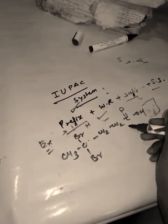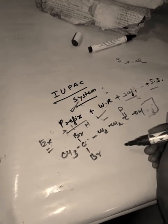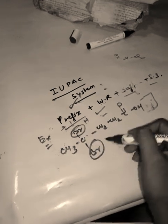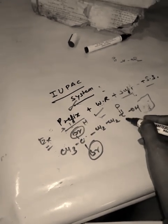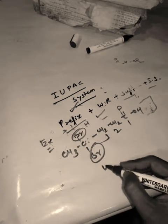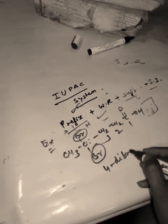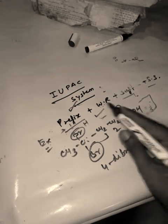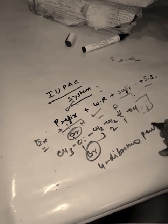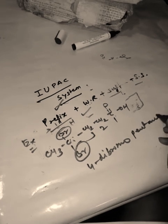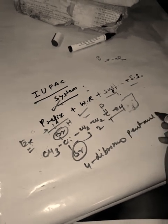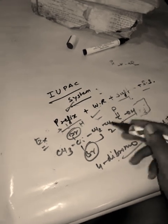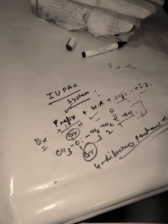Another practice example: two prefixes (bromo groups) are present. Numbering from the appropriate side gives one, two, three, four. Five carbons total — 'pent'. Single bond gives '-ane', and -COOH gives '-oic acid'. So the IUPAC name is 4,4-dibromopentanoic acid.